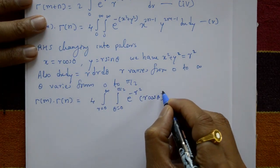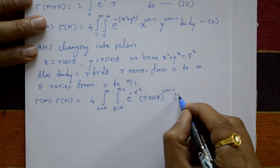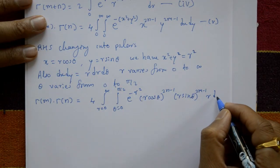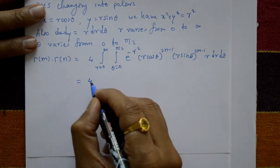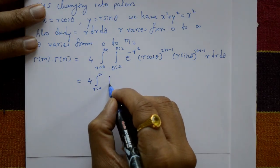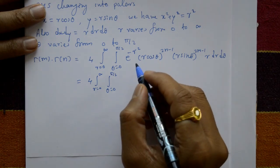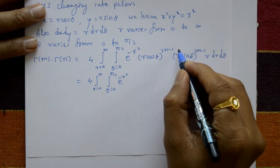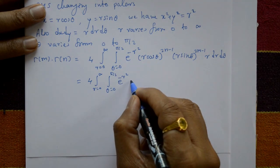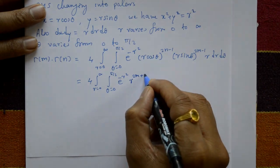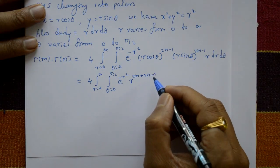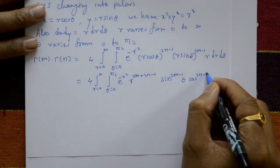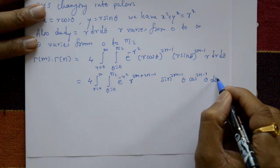Substituting x equals r cosθ gives (r cosθ) raised to (2n−1), and y equals r sinθ gives (r sinθ) raised to (2m−1), and dx dy becomes r dr dθ. Collecting powers of r: r^(2n−1) times r^(2m−1) times r gives r^(2m+2n−2+1) equals r^(2(m+n)−1). The angular part gives sin raised to (2m−1)θ times cos raised to (2n−1)θ.